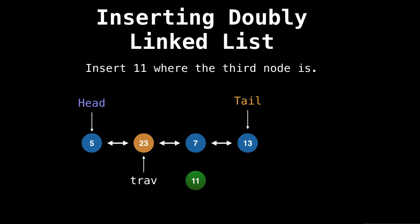Let's create the new node, which is node 11. Point 11's next pointer to equal seven. Also point 11's previous pointer to be 23, which we have a handle on because of the traverser. Now, we make seven's previous pointer equal to 11, so we can go backwards from seven to 11.